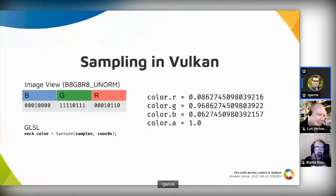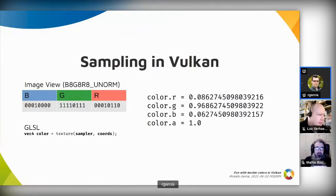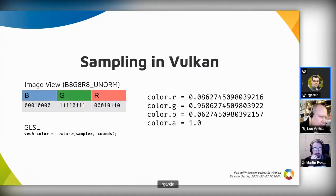I've already started mentioning border colors as part of the extension name. Before we dive directly into the extension, let me give you a brief introduction to sampling operations in Vulkan and explain where border colors fit in that. Sampling means reading pixels from an image view, and it's typically done in the fragment shader — for example, when you want to apply a texture to some geometry.